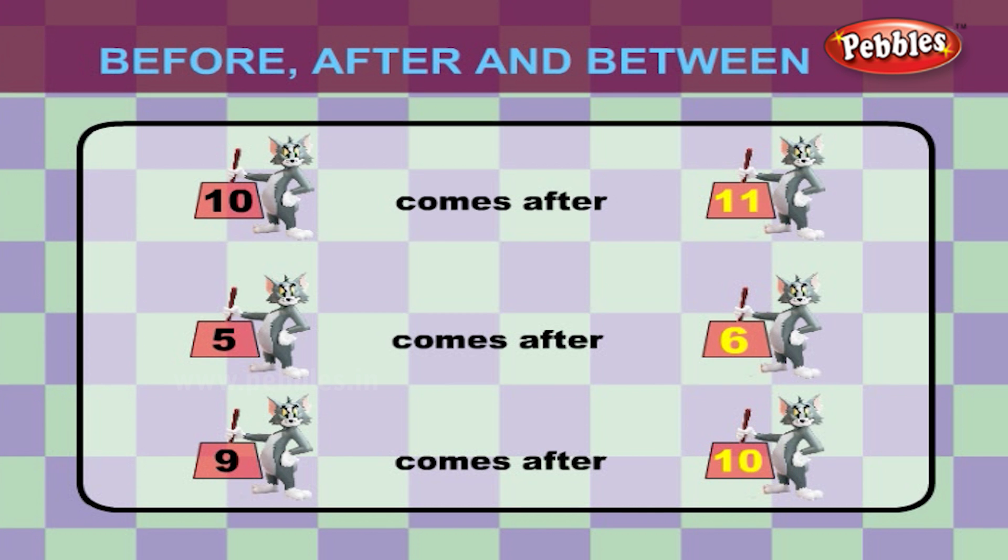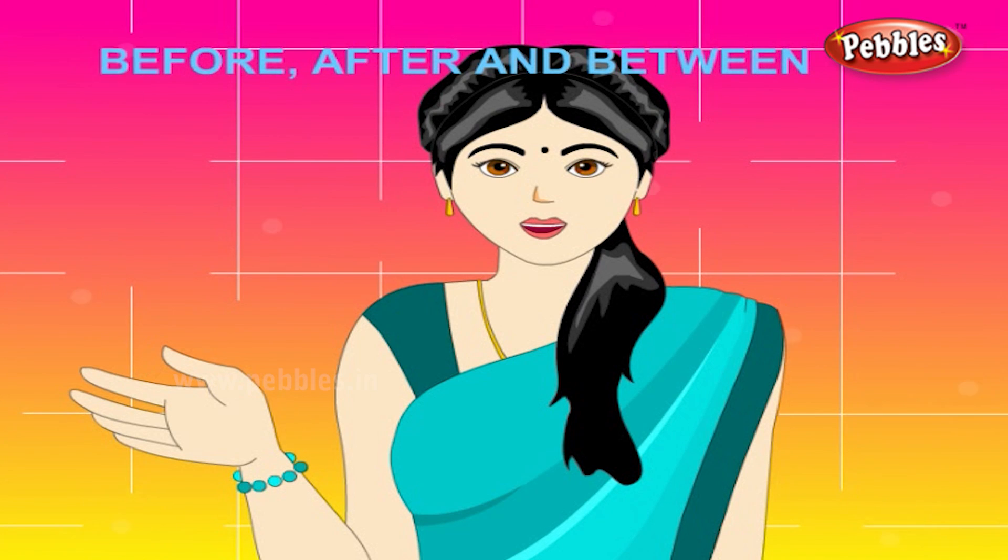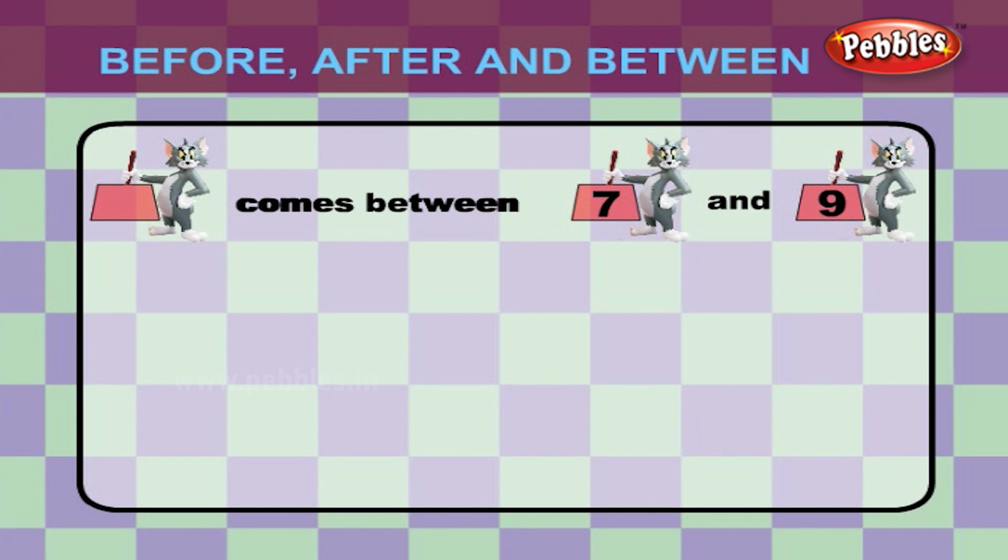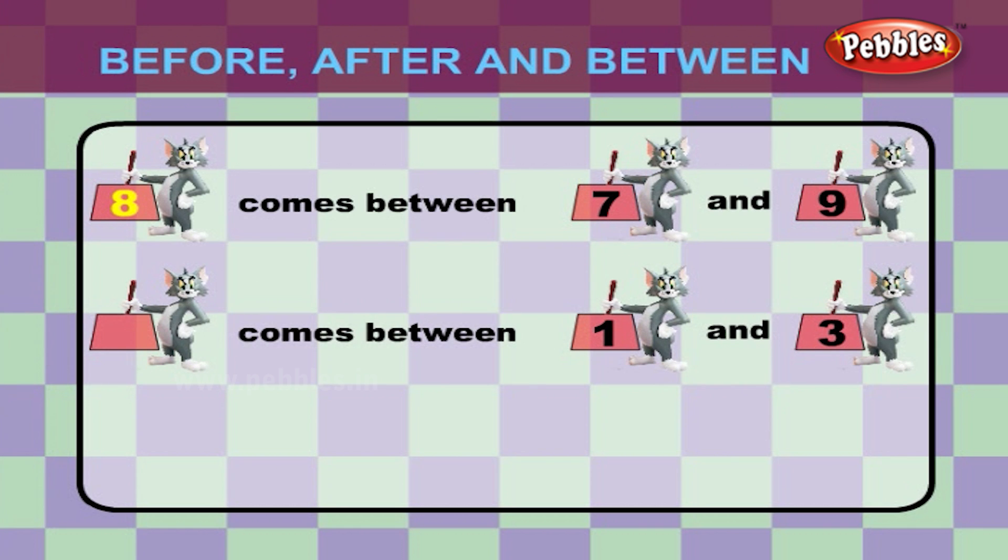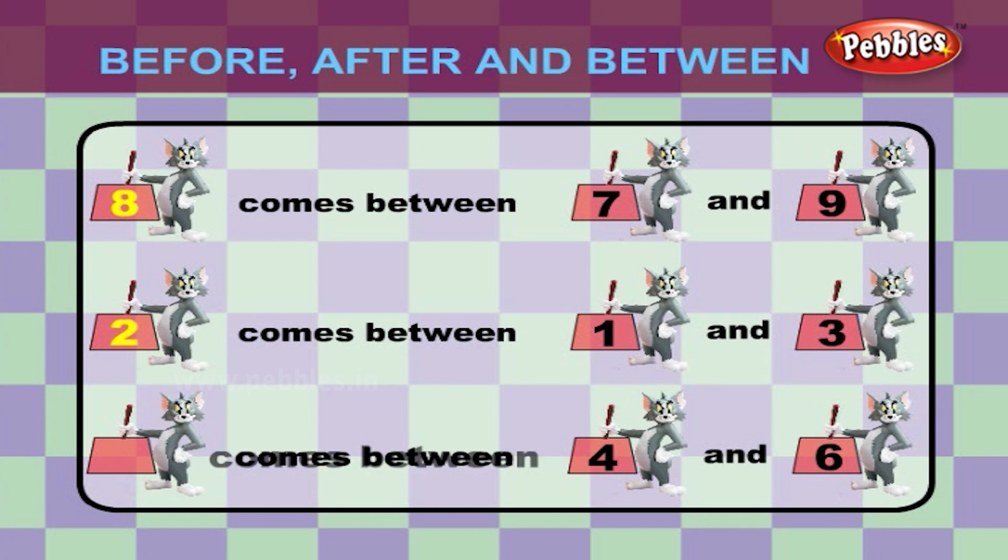10. Let us try some examples for BETWEEN numbers. What comes between 7 and 9? 8. What comes between 1 and 3? 2. What comes between 4 and 6? 5.